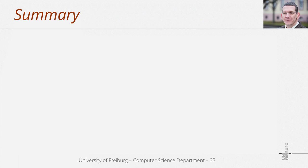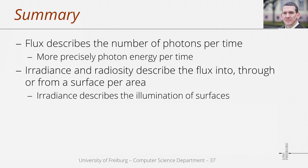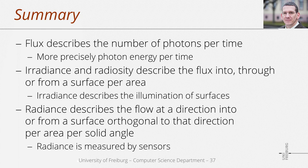That's it about the introduction to radiometric quantities that can be used to measure light. Flux describes the number of photons per time. Irradiance and radiosity are flux densities that describe flux into or from a surface per area, and irradiance is often used to describe the illumination of surfaces. Finally, radiance describes the flux per projected area per solid angle—this quantity is used to characterize the flux along a ray, and accordingly is the quantity computed in a ray tracer and used to characterize the captured flux at a sensor. Thank you for your attention.